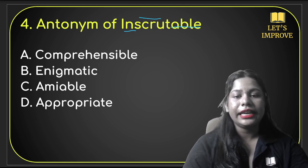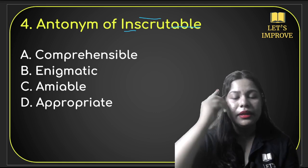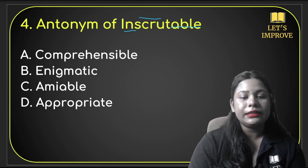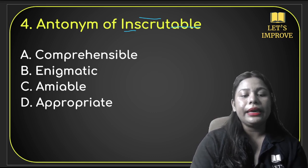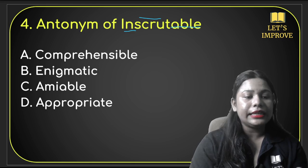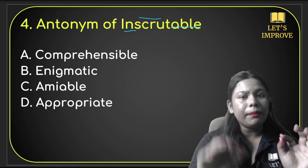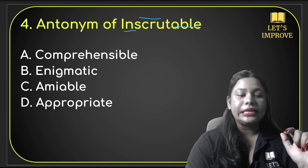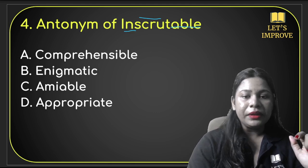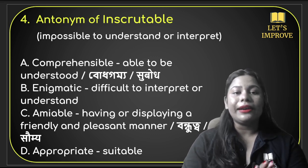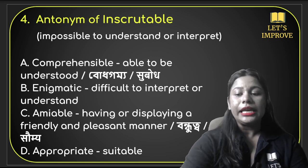Next word: 'inscrutable.' This is how you pronounce it — inscrutable. The options are: comprehensible, enigmatic, amiable, and appropriate. If you don't understand something, it is inscrutable. Inscrutable means impossible to understand or interpret.